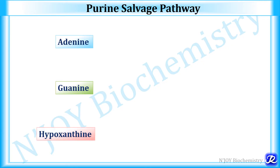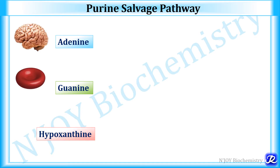The purines which are salvaged through this pathway are adenine, guanine, and hypoxanthine. This pathway is very important for organs like the brain and erythrocytes, where the de novo synthesis of purine is not operative. This salvage pathway includes two important enzymes and PRPP is the starting material required for this pathway.